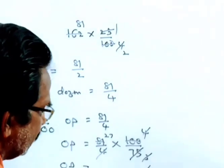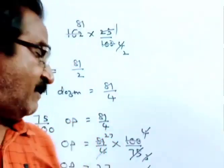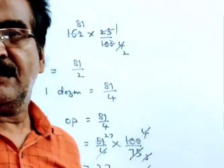So, the original rate or original price of X per dozen was 27 rupees, friends. Thank you.